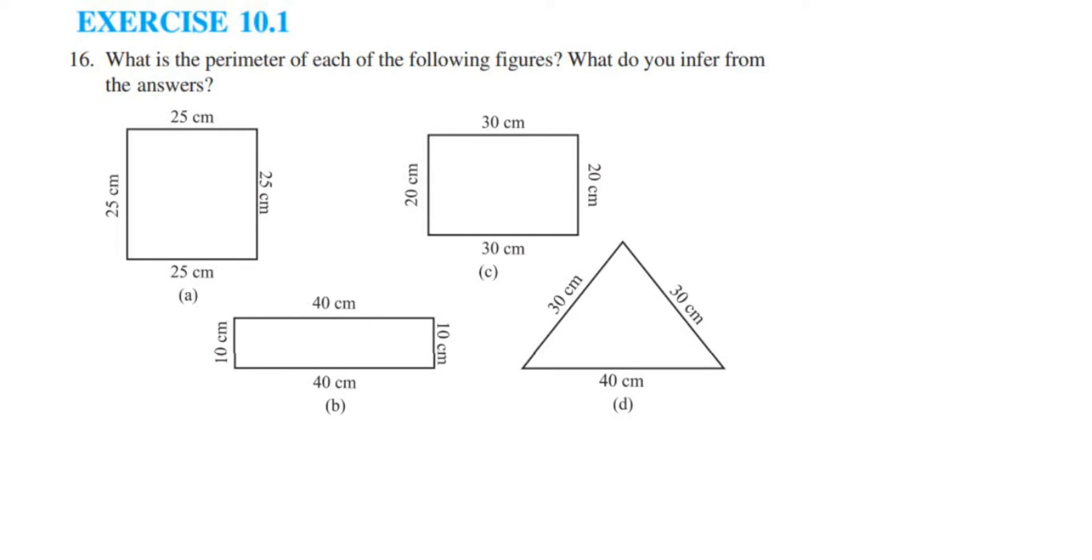Hey everyone, here I am doing Exercise 10.1, question 16, from the chapter on mensuration of classics. The question asks: What is the perimeter of each of the following figures, and what do you infer from the answer? First, we have to find out the perimeter of each figure given, and then later we have to conclude by observing it.